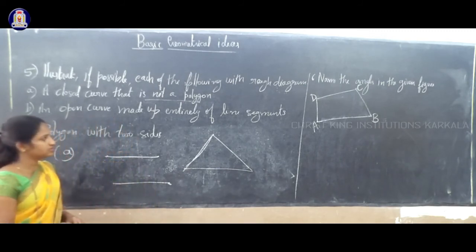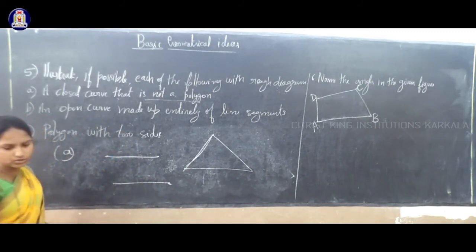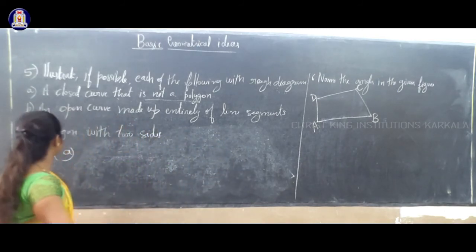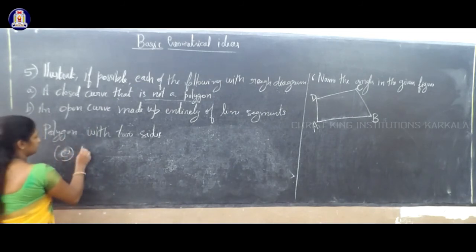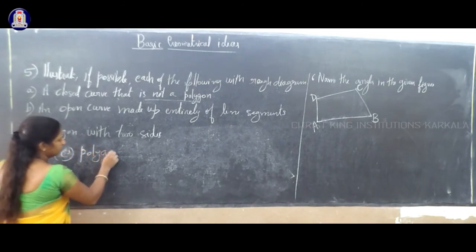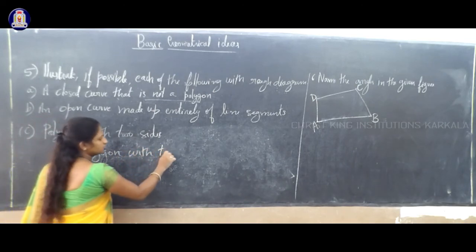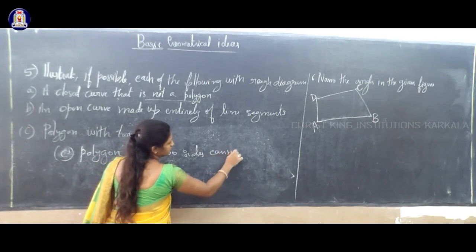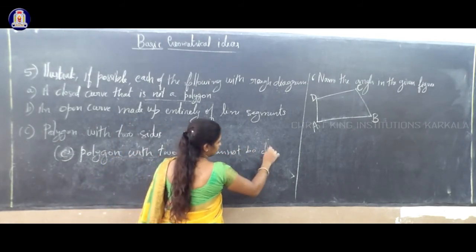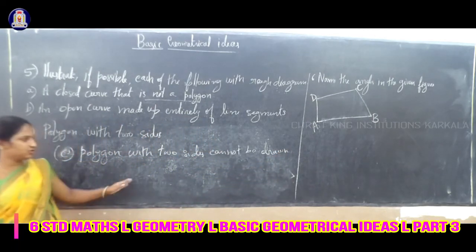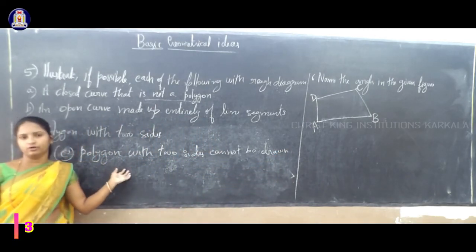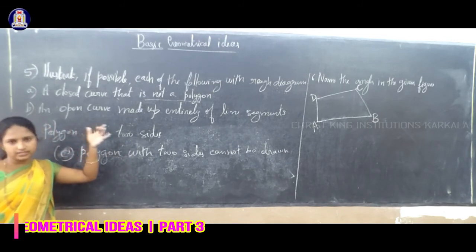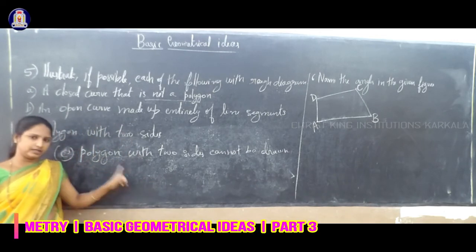Polygon with two sides is impossible. With three line segments we get a triangle shape, which is a closed polygon. With two line segments you cannot get any polygon. Triangle is a polygon. So polygon with two sides cannot be drawn.